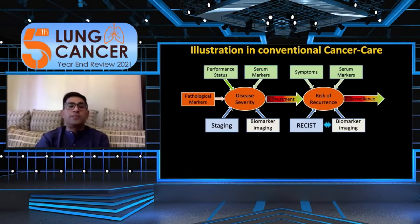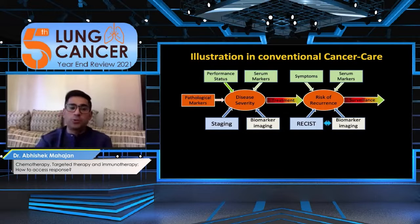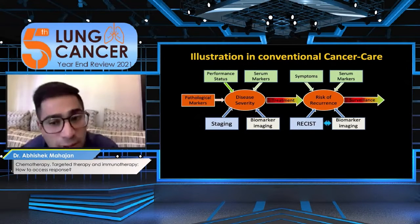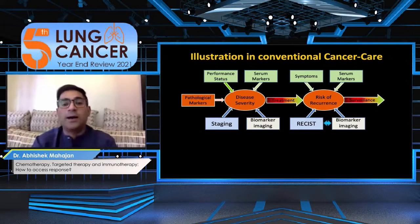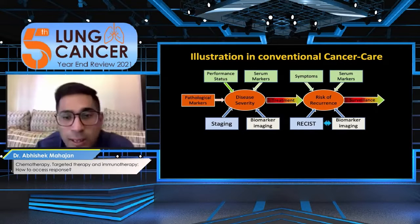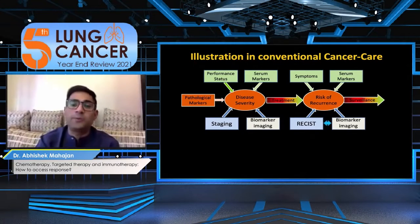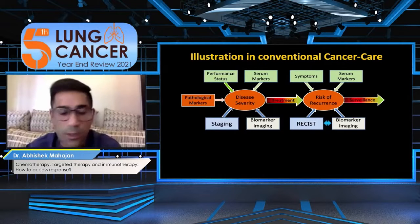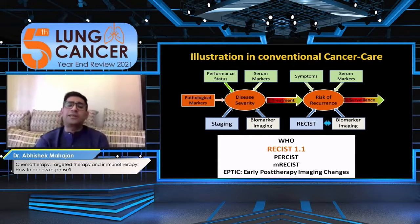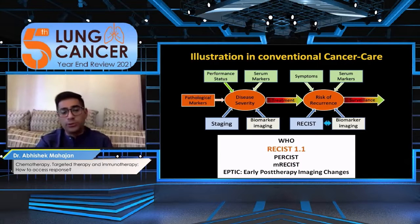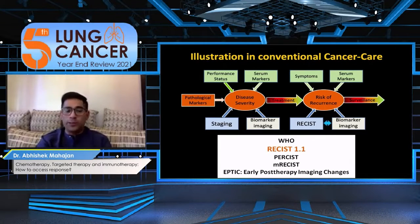In conventional cancer treatment, you do the disease severity assessment, you do the risk of recurrence and apply this at multiple stages to assess the treatment and follow these patients on surveillance for long-term outcomes. The conventional criteria used are the WHO criteria, but in practice we normally use RECIST 1.1.